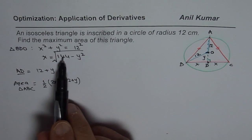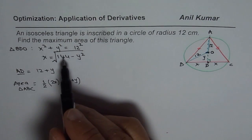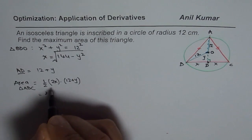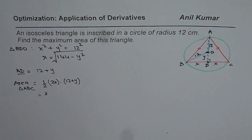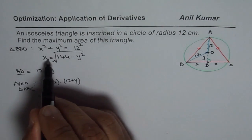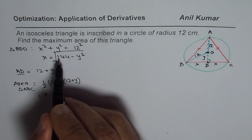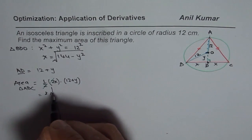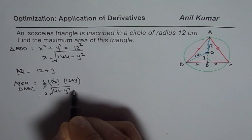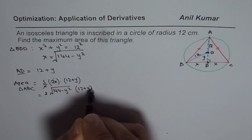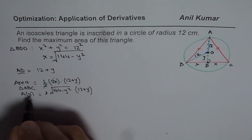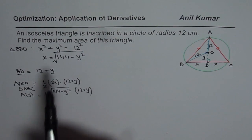The second step is to write this equation in one variable. We replace X with its square root expression. So the area equals square root of (144 minus Y²) times (12 plus Y), and this area is entirely in terms of Y. So we write area as a function of Y.